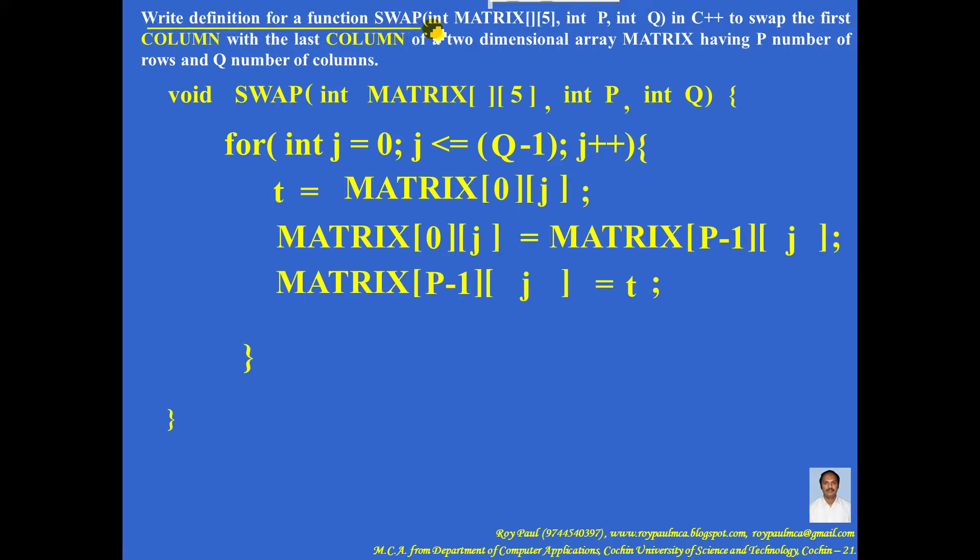Write definition for a function swap in C++ to swap the first column with the last column of a two-dimensional array whose name is matrix having P number of rows and Q number of columns.